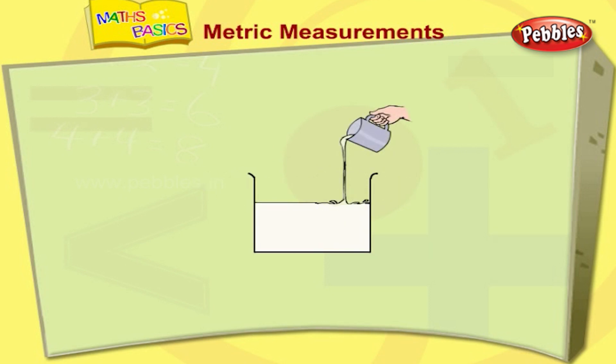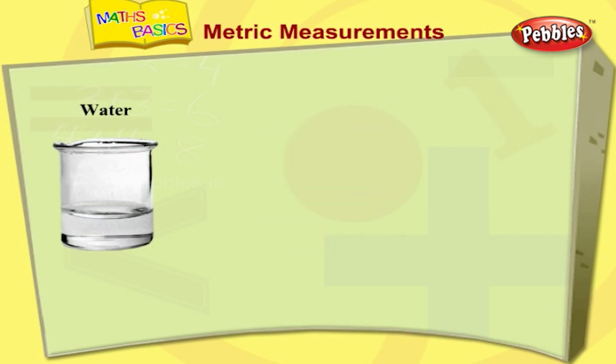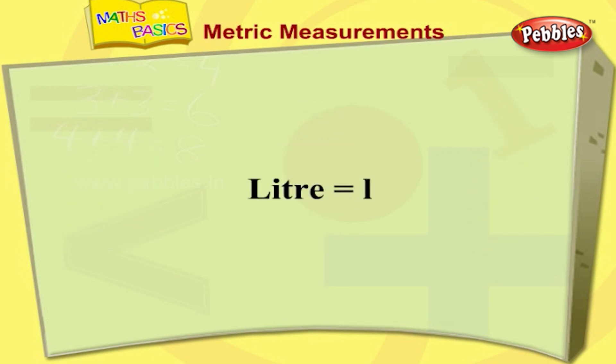Let us now see about capacity. The capacity of a container is the quantity of liquid it can hold. For measuring the quantity of liquids like water, milk, and oil, we use the unit liter. We denote it as L. Smaller quantities of liquid are measured in milliliters. It is denoted as ml.